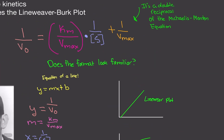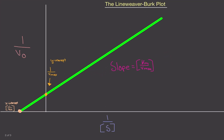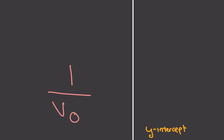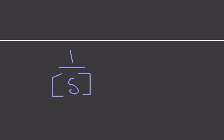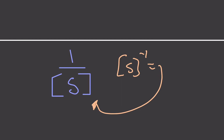The Lineweaver-Burk equation is known as a double reciprocal of the Michaelis-Menten equation. On the Y-axis we have one over the initial velocity, and the X-axis is one over the substrate concentration. Lineweaver and Burk took the initial velocity from the Michaelis-Menten equation, put it to the negative first power, and turned it around — that's one reciprocal. The other reciprocal is the substrate concentration also taken to the negative first power. So it's a double reciprocal.